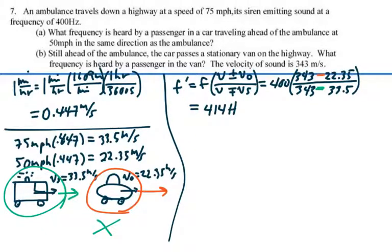Kind of makes sense. It should be a little bit higher because all things considered, the distance between the two objects is getting shorter. So that should cause the frequency on our basic intuition to go higher. Alright, part B.